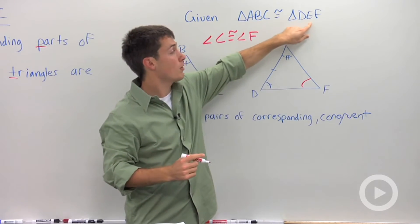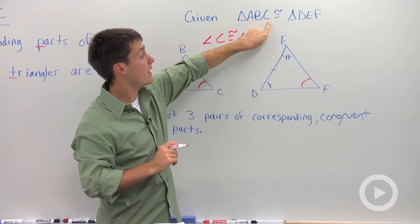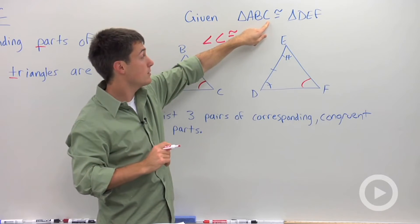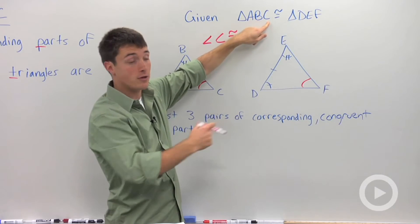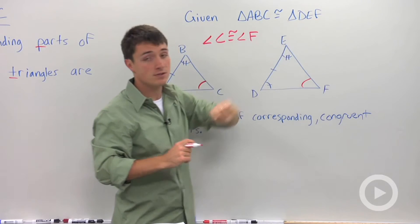I could also look at this order right here. That order is very specific. It says if angle C in this triangle is congruent to something in another triangle, it has to be angle F. Because C is the third letter and F is the third letter.